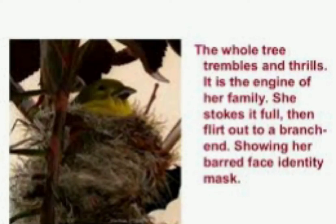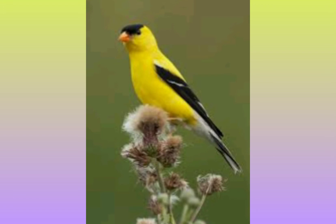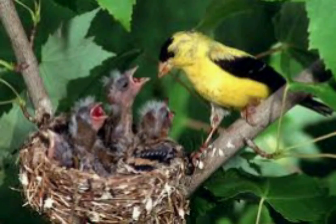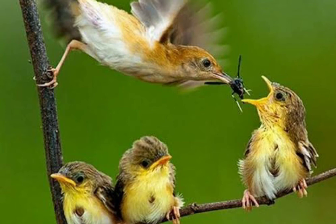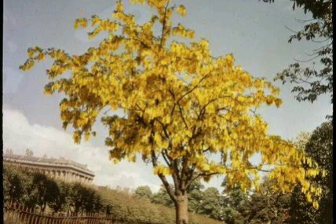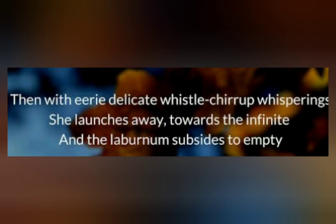The next stanza reads: 'The whole tree trembles and thrills. It is the engine of her family. She stalks it full. Then flirts out to a branch end, showing her bark-face identity mask.' The poet describes how the whole tree was thrilled by the mother bird and the chirping of the young ones waiting for food. The lifeless tree had come back to life because of the goldfinch. Then: 'With airy, delicate, vessel-chirrup whisperings, she launches away towards the infinite and the laburnum subsides to empty.'